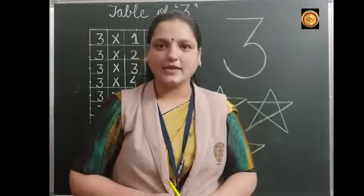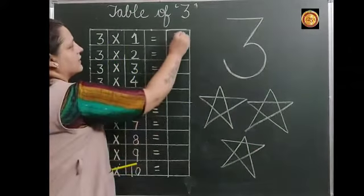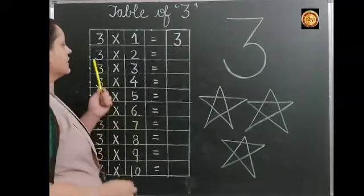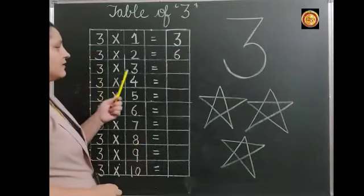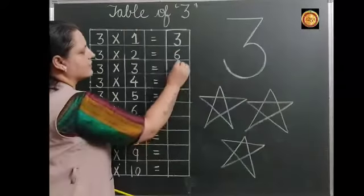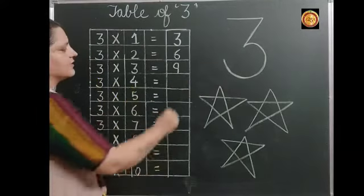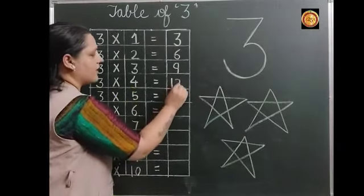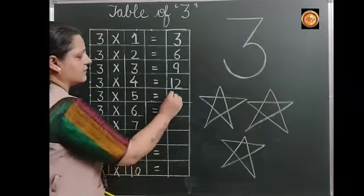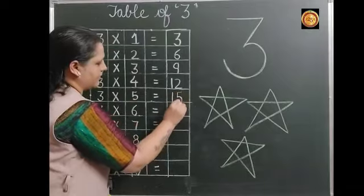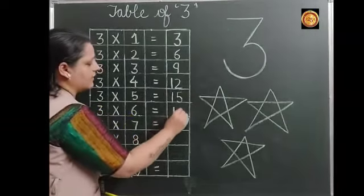So let's start. 3, 1 is 3. 3 2's are 6. 3 3's are 9. 3 4's are 12. 3 5's are 15. 3 6's are 18.